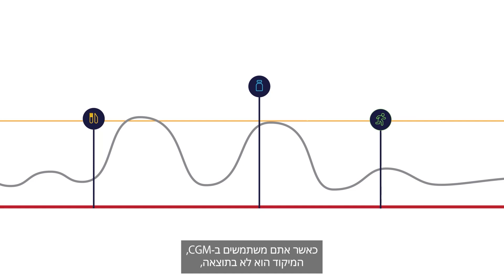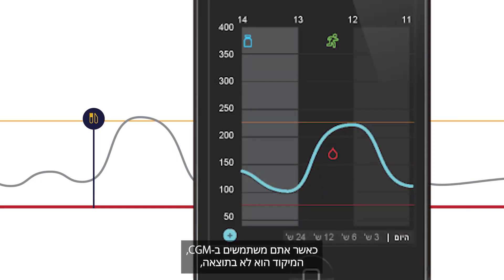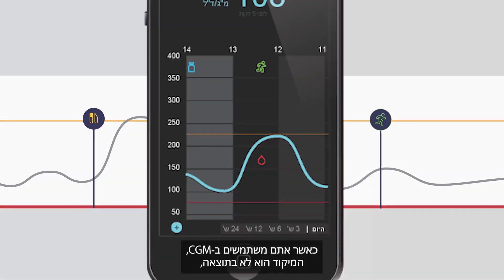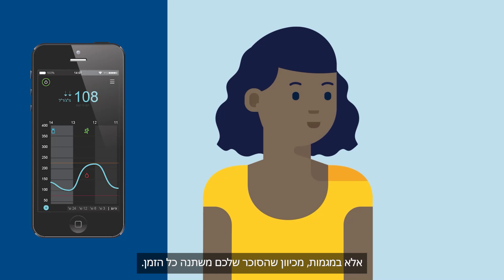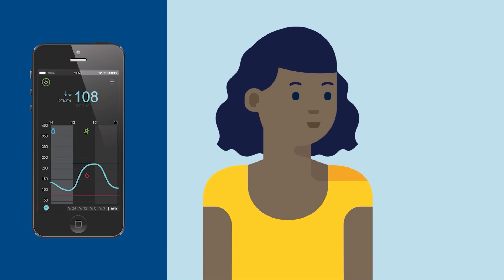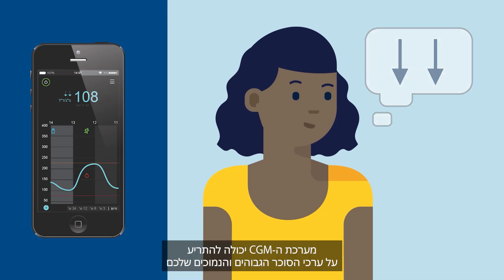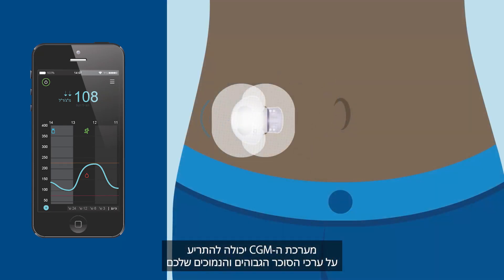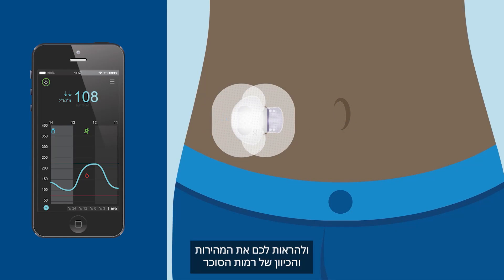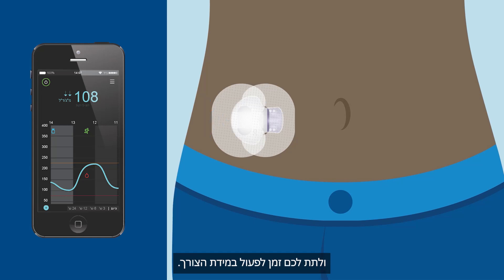When you use CGM, the focus is not on the individual number, but on the trends, since your glucose constantly changes. Is your glucose rising slowly, or is it falling rapidly? Your CGM system can alert you on your high and low glucose values, and show you the speed and direction that your glucose levels are moving, giving you time to take action if needed.